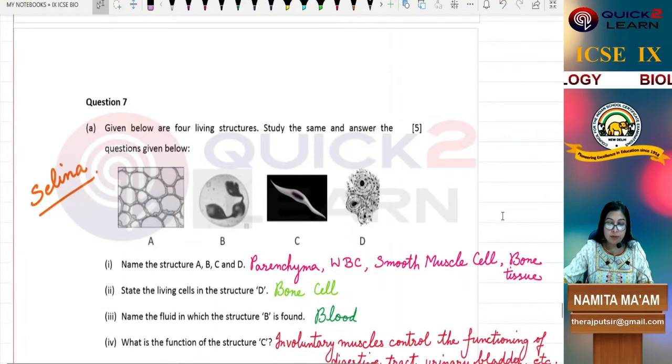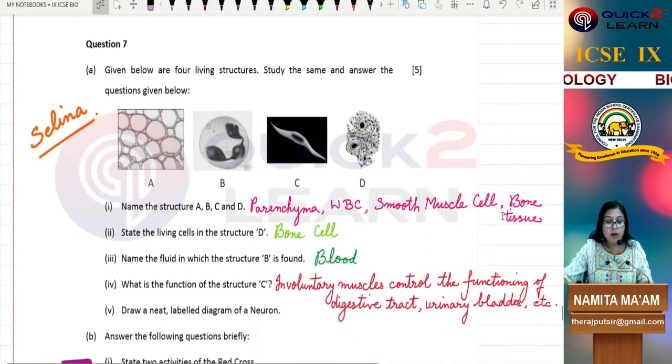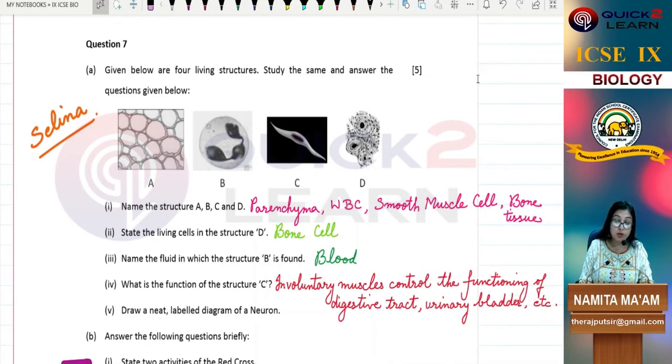Now let's look at the last question, which is question number 7. Given below are four living structures. Study the same and answer the questions given below. We have four diagrams: A, B, C, D. Identify them. These are parenchyma cells. They have big oval structures and intercellular spaces. Where do you find this structure? Plant tissues. Parenchyma cells where there are many air spaces are present mostly in aquatic plants, and parenchyma cells where chlorophyll is present are called chlorenchyma.